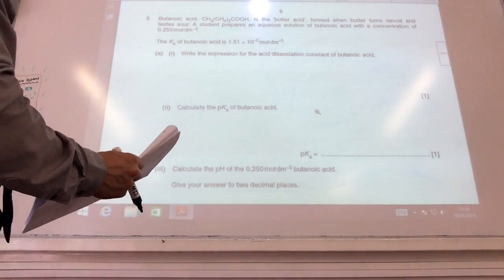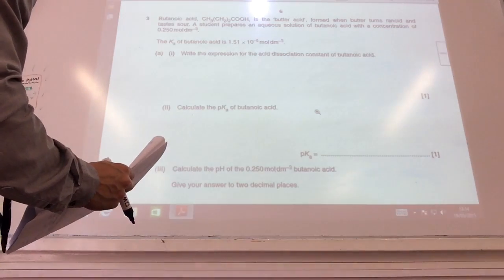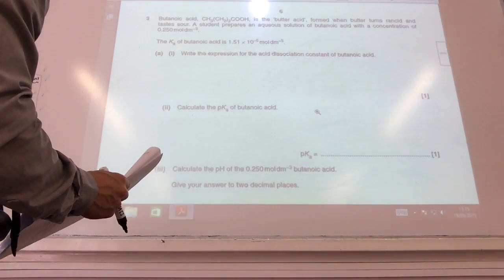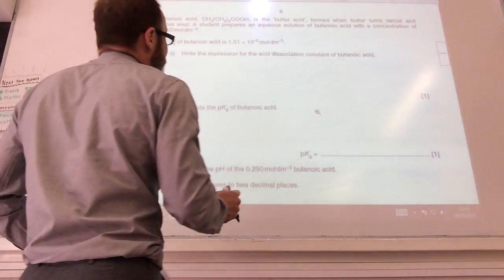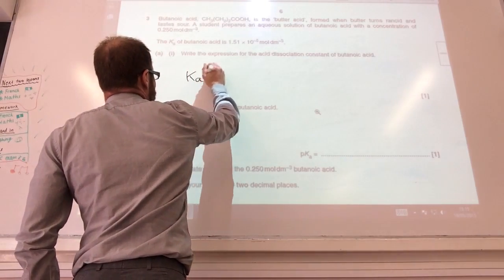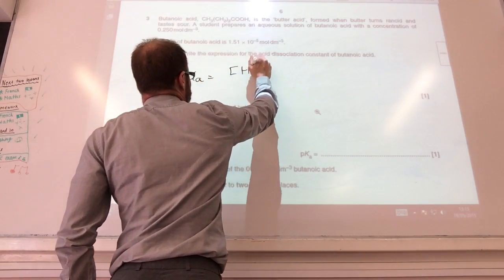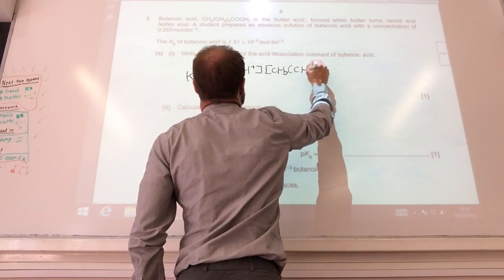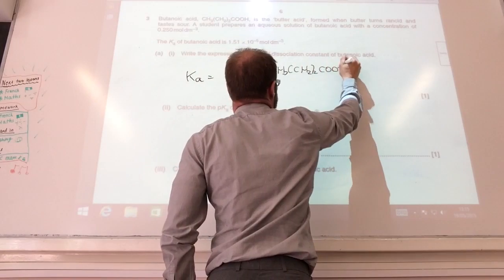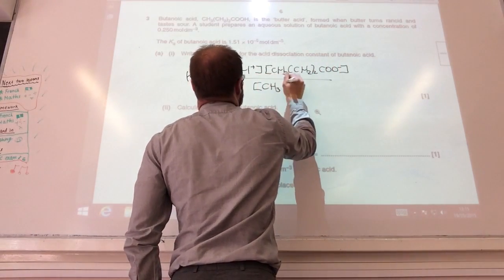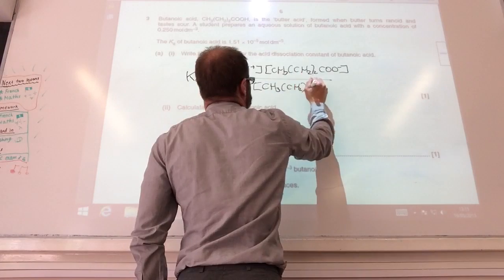Okay, so we're kicking off with some acid stuff now. Butanoic acid. Right, so write an expression for the dissociation constant of butanoic acid. So we know that Ka is H+ with the deprotonated acid there,